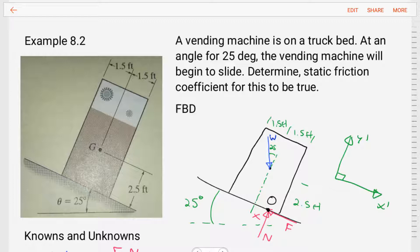Let's read the problem statement. A vending machine is on a truck bed. At an angle of 25 degrees, the vending machine will begin to slide. Determine the static friction coefficient for this state to be true. So the vending machine wants to slide. What is its static friction coefficient?